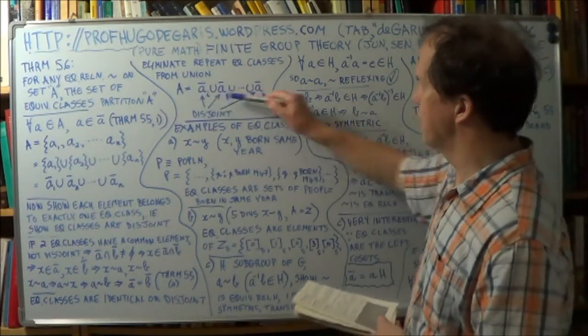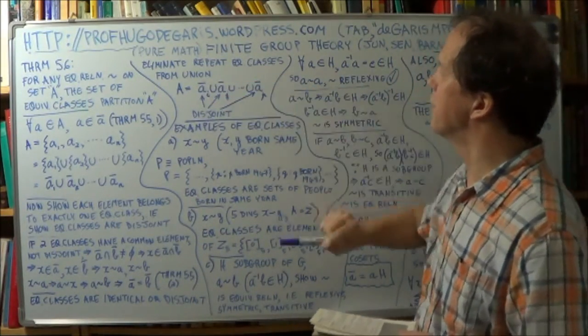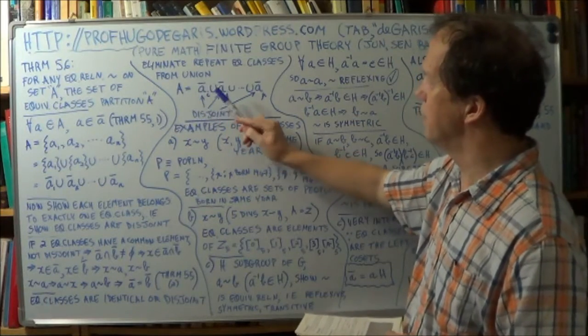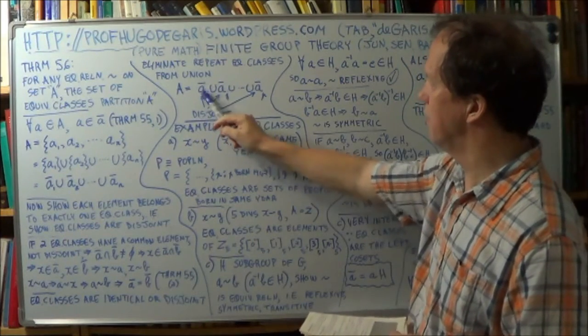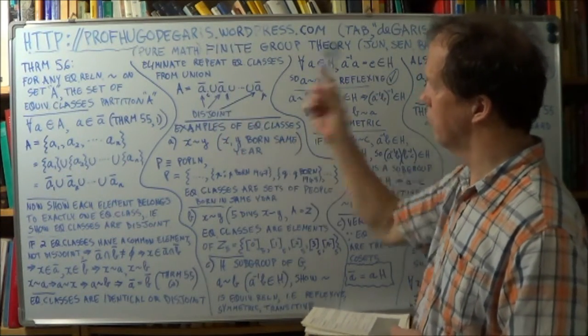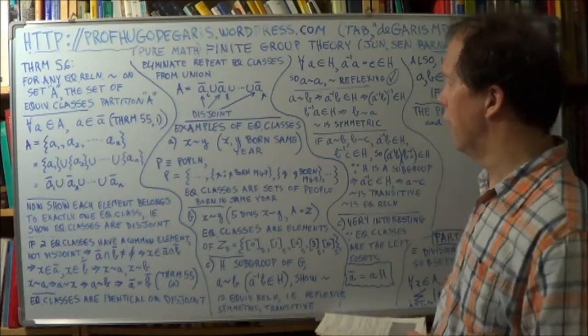So, there's sort of a summary of what I've just been saying. So, A is the union of disjoint residue classes. Each of these is disjoint, relative to all the others.